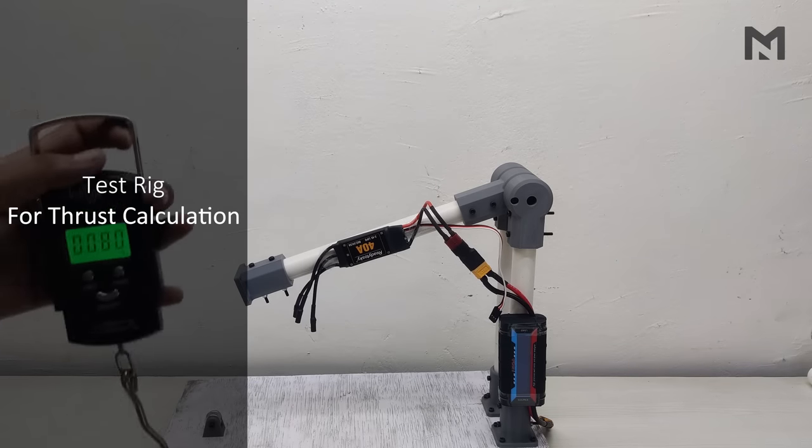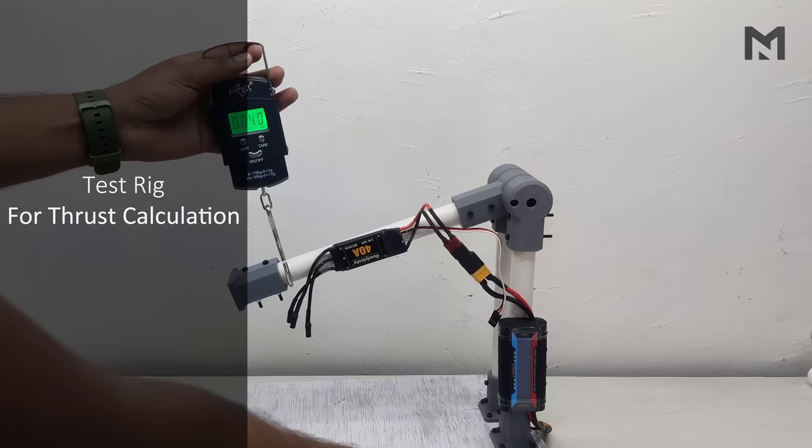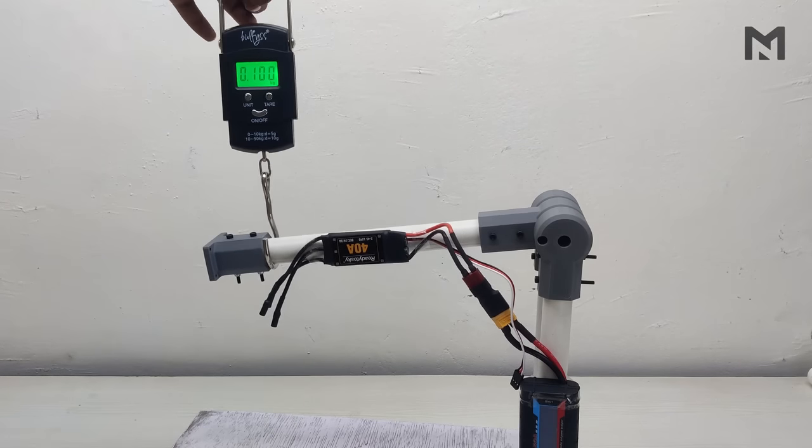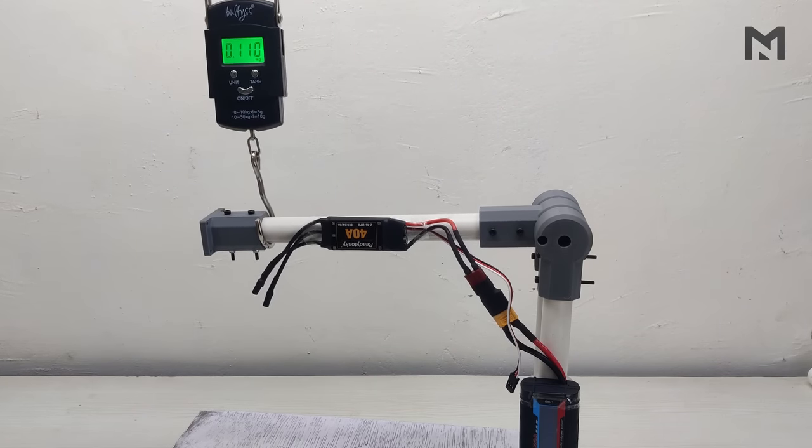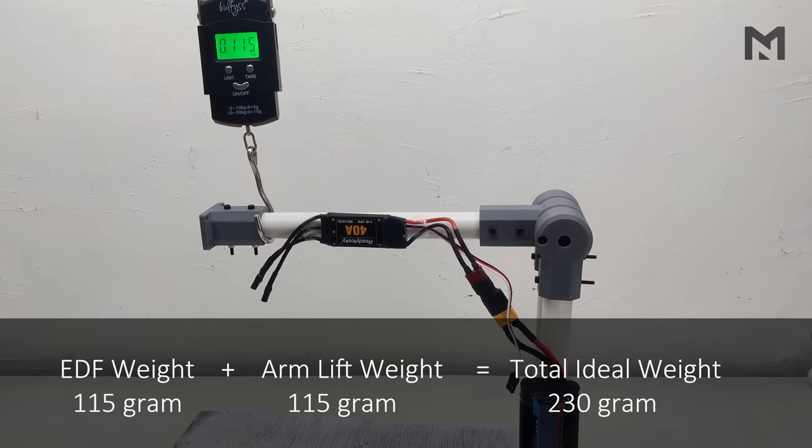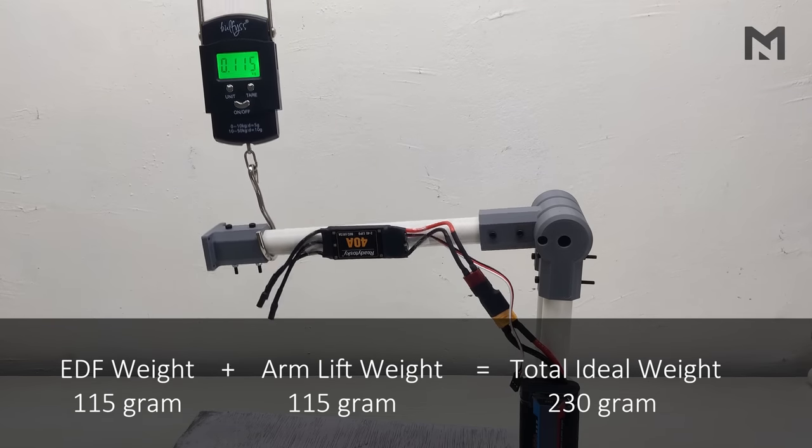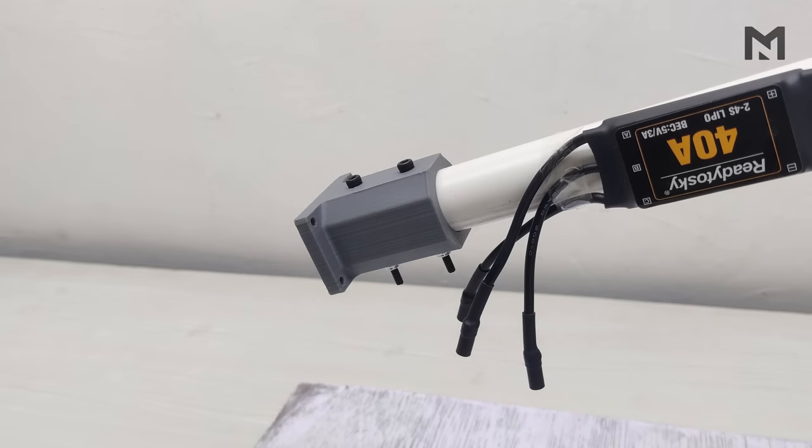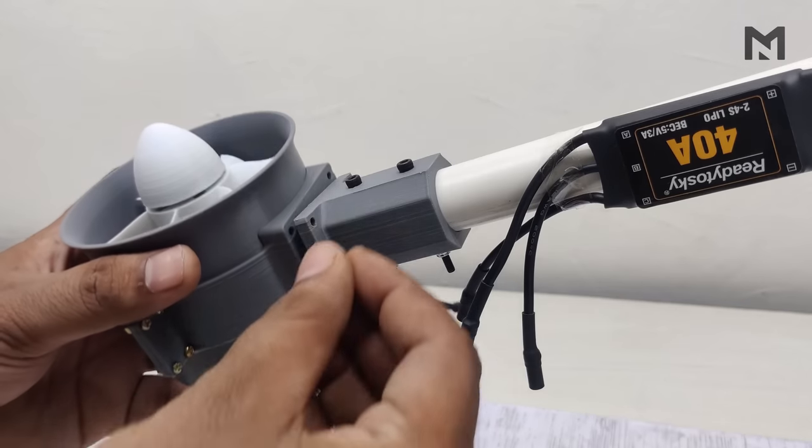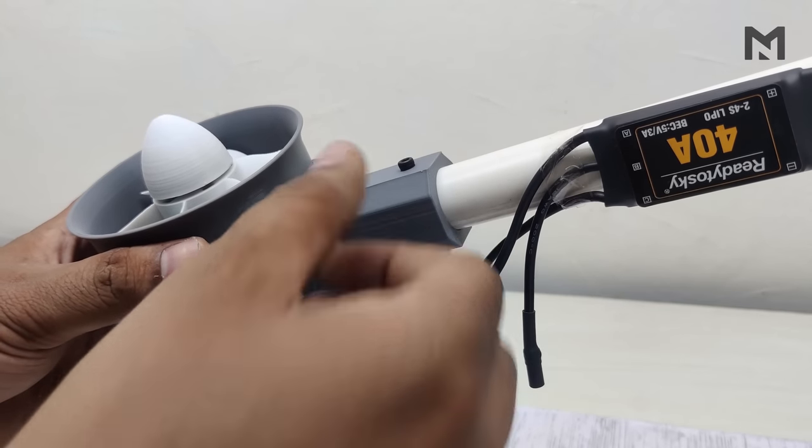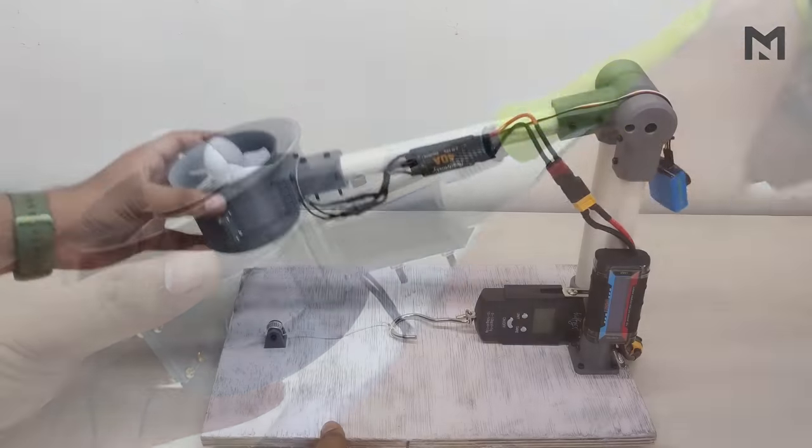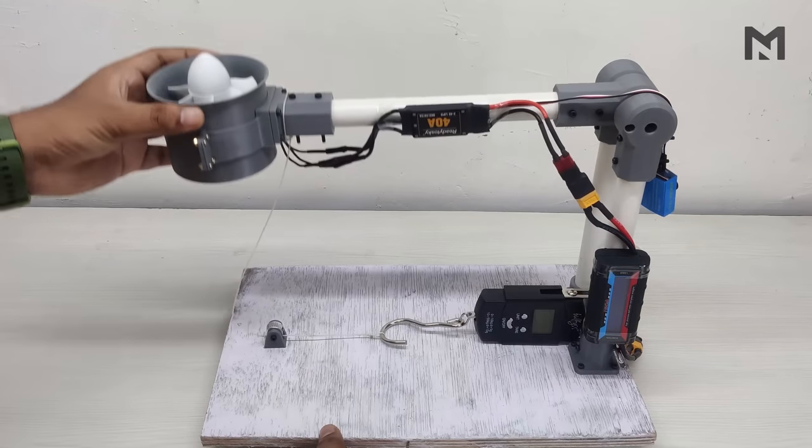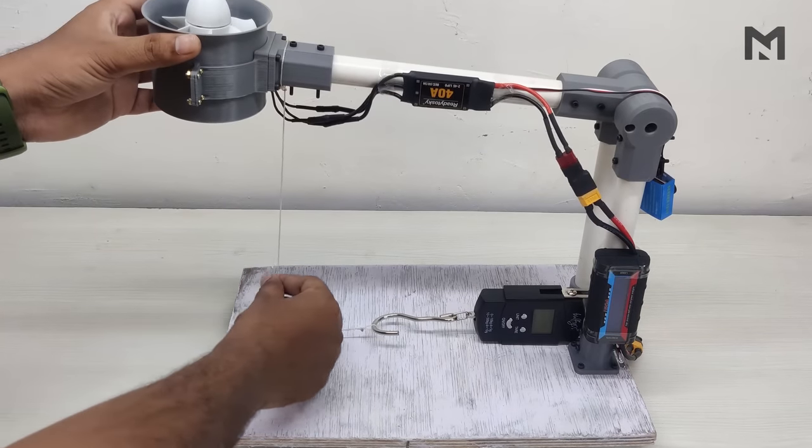This is the test rig which I made in the previous video. Now I will check the force needed to lift this arm in the mid position, and that's around 115 grams. So the total ideal weight becomes 230 grams. Now attach the EDF to the test rig and connect them with four screws of M3 diameter and 10mm length.